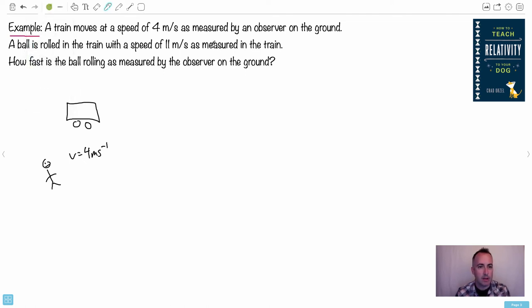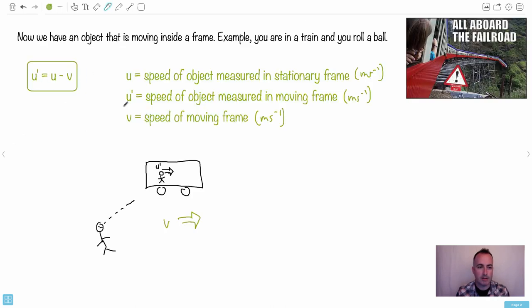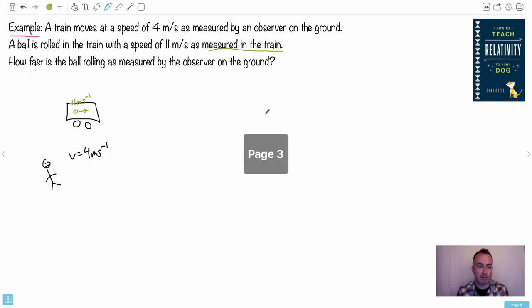A ball is rolled in the train with the speed of 11 meters per second as measured in the train. Now, what do we mean by that? We mean within the train's frame of reference. In other words, like in that dumb movie there with Val Kilmer, maybe he would throw a ball at 11 meters per second or something. So you take this ball right here and you move it at 11 meters per second and try to think what letter that is. That would be U prime because that's the speed of the object measured in the moving frame. So it's good to just label things. The big key to doing relativity is just really taking your time and thinking who's measuring what.